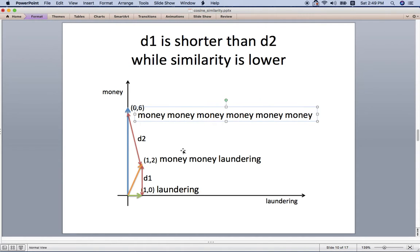Because laundering is just like washing your clothes, right? But money laundering and multiple monies here has more similarity, because money laundering has similarity with real money here. So we cannot just use the Euclidean distance in this sense.